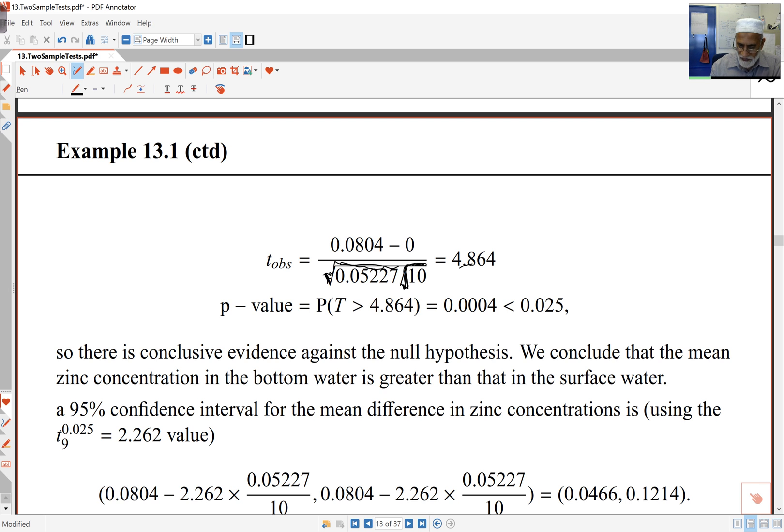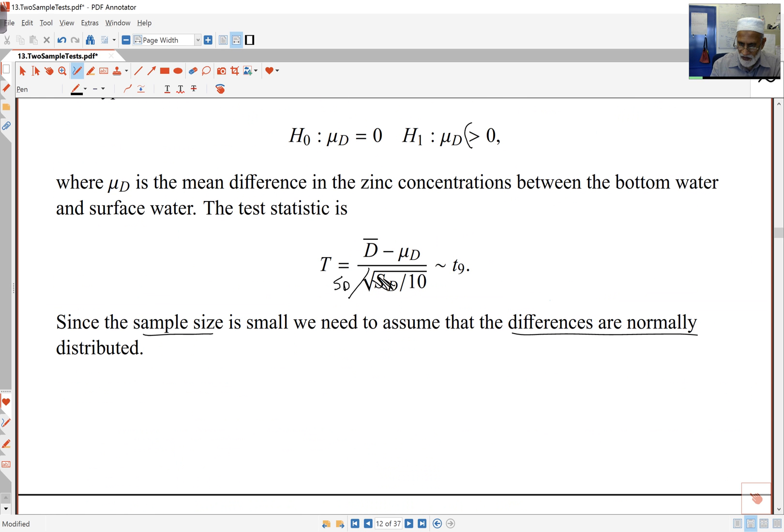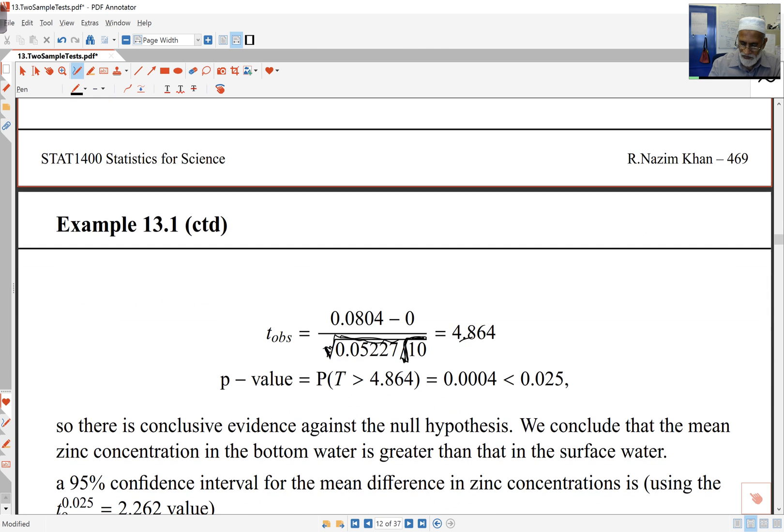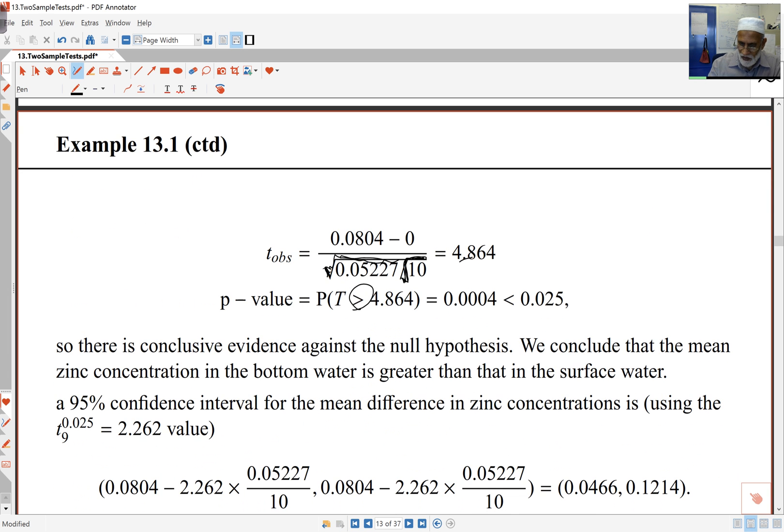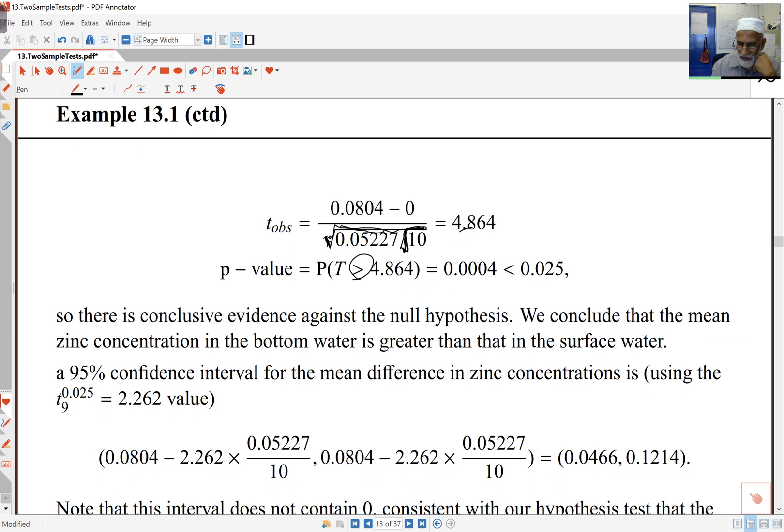So here, the probability, the p-value is probability of t bigger than 4.864, my t-value observed. And of course, the bigger than here matches the bigger than in my statement for the p-value. And from R, this comes out to be 0.0004, which is less than 0.025. I'm doing a one-sided test. So my alpha level by default is 2.5%. That means, because this is much smaller than that, the alpha level, so I'm concluding there's conclusive evidence against the null hypothesis. So I conclude here that mean zinc concentration in the bottom is greater than that on the surface.